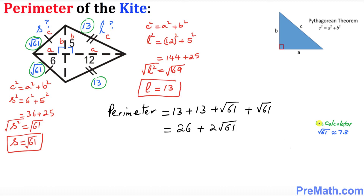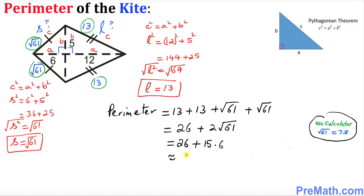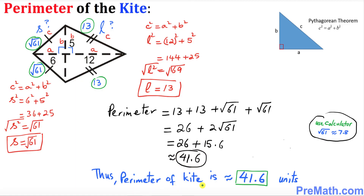We know that the square root of 61 is approximately 7.8, so that gives us 26 plus 15.6, which is approximately 41.6. Thus the perimeter of the kite turns out to be approximately 41.6 units. Thanks for watching, and please subscribe to my channel for more exciting videos.